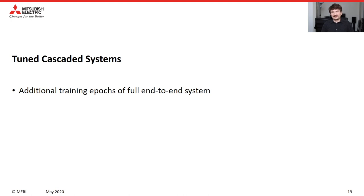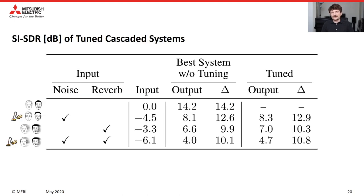Finally, we evaluated tuning of the cascaded systems. Since all subtasks are end-to-end, we can combine them and train the whole model at once, using additional training epochs to tune the cascaded system end-to-end. The first column of results shows the best systems without tuning from the previous slides. The tuned models show that these additional training epochs improve performance by roughly half a dB.